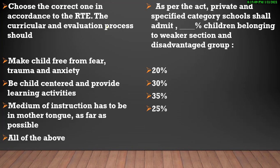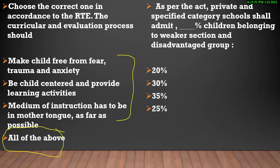Now the second-to-last question: Choose the correct option in accordance with RTE — curricular and evaluation process should: make child free of fear, trauma and anxiety; be child-centered education with learning activities; medium of instruction should be mother tongue as much as possible; या all of the above. These all are positive points related to child education, so the answer is all of the above — option number 4 is your correct answer.